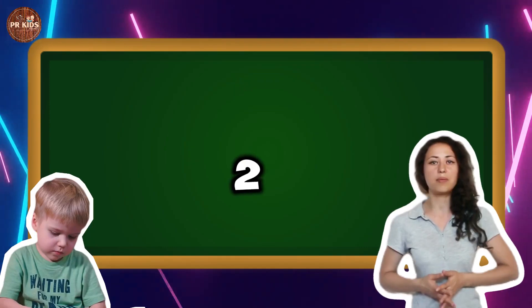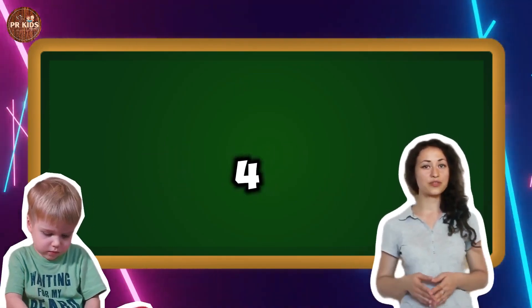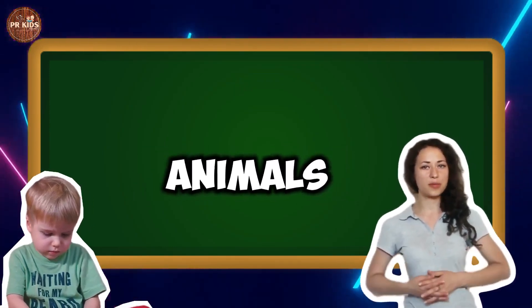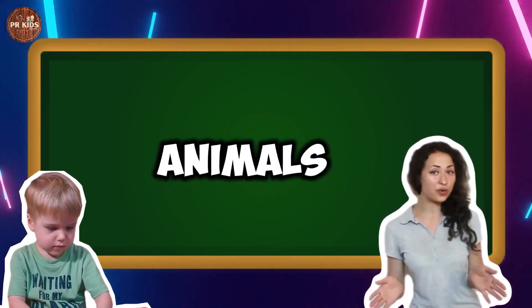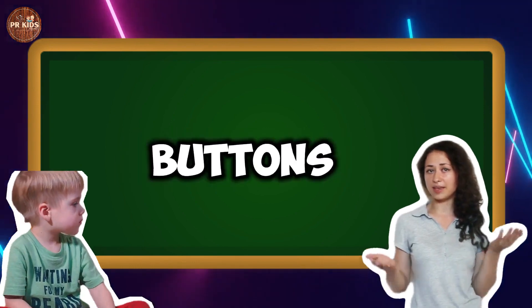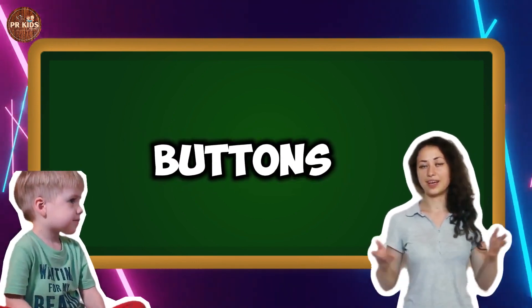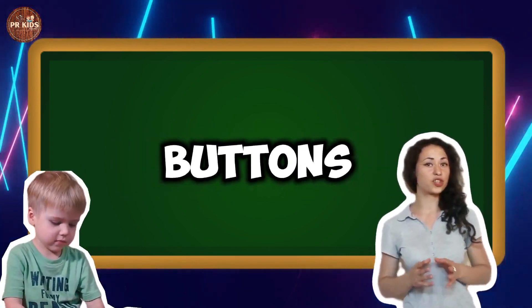Two animals plus two animals makes four animals. One, two, three, four animals. Three buttons plus three buttons makes six buttons. Six buttons.